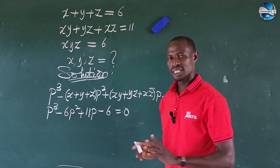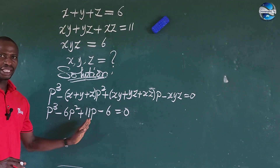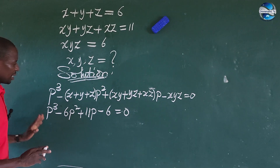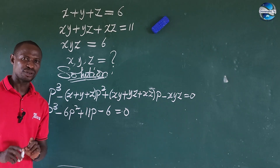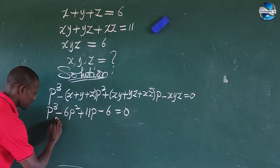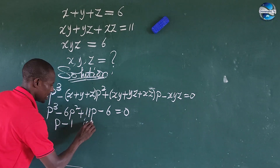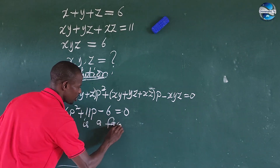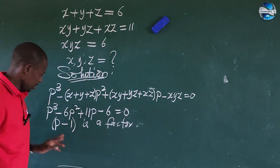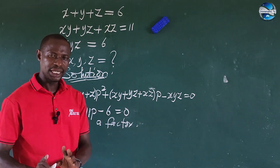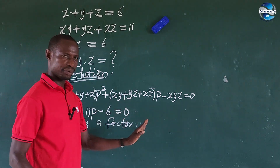We use the trial-and-error method to get the first factor of this polynomial equation, and we discover that the first factor is P minus 1. So P minus 1 is a factor, meaning the value P equals 1, when substituted into this expression, gives us 0.